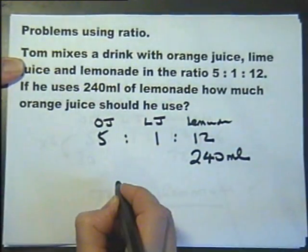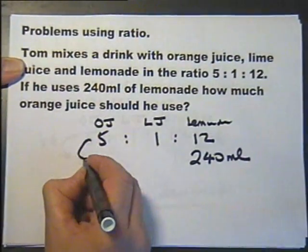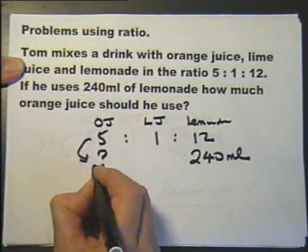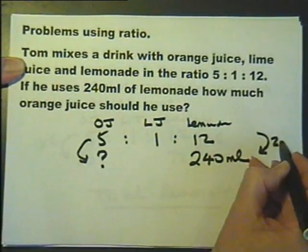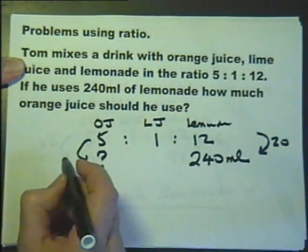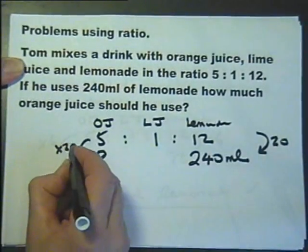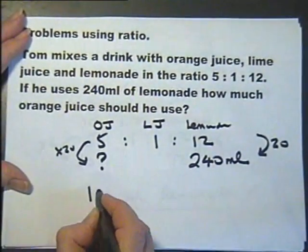How much orange juice would he use? 20 multiplied by that 12 gives me 240. Therefore, 20 multiplied by that 5 will give me the answer to the question.